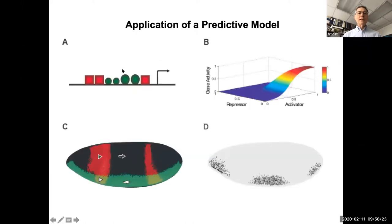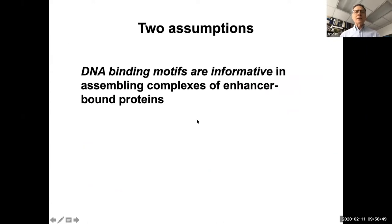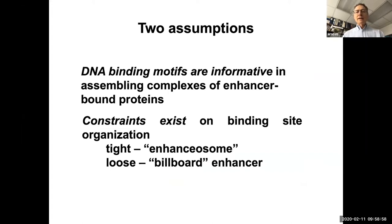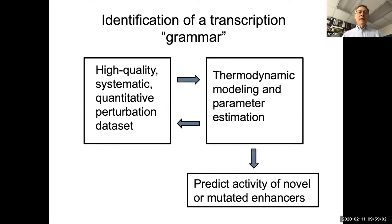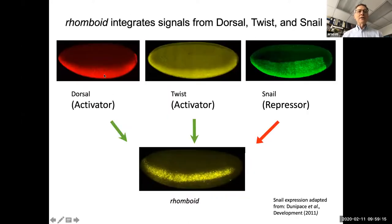If you knew the grammar, you'd look at an enhancer sequence, compute its output on a regulatory surface, measure protein inputs in the embryo, and predict the output. The key challenge was generating high-quality data. We took two activators and one repressor acting on an enhancer that paints a stripe on the embryo. Using a 300-base-pair enhancer from rhomboid, we generated transgenic animals and measured expression quantitatively. The perturbation analysis involved knocking out particular key sites — single or double activators or repressors — and measuring the results.